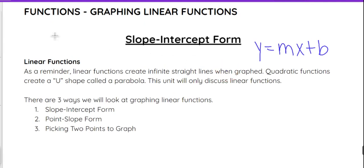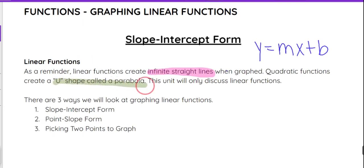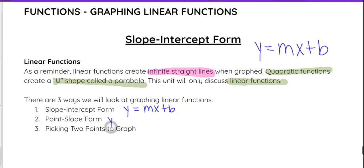As a reminder, linear functions create infinite straight lines when they are graphed. We've talked briefly about quadratic functions, which make a u-shape called a parabola. But in this unit we're going to focus only on graphing linear functions. There are three different formats we're going to look at. Today we're going to start with y equals mx plus b. We'll get into point-slope form in a future video, which is y minus y1 equals m times x minus x1. And we'll also talk about picking two points to graph, because you only need two points to technically graph a line.